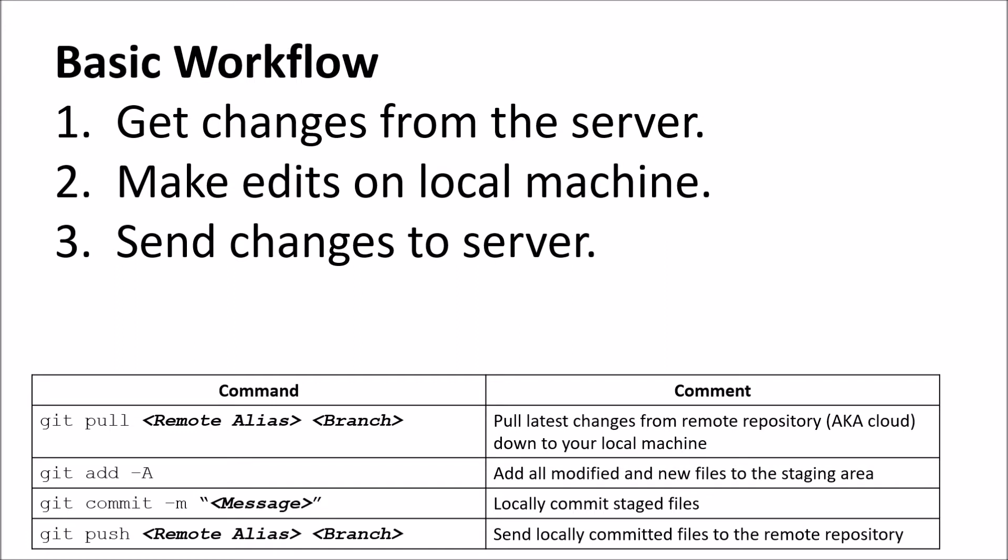From the staging area, git commit will allow you to commit those staged files locally along with a small message describing what you actually did. Those two commands are only making changes on your local machine — you haven't actually pushed them up to the server yet. That's what the last command, git push, is going to allow us to do: send those locally committed files up to the remote repository.